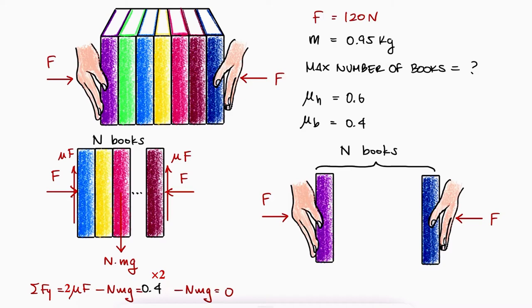In this case, we're assuming that the friction force going up is caused by the books on both sides. So, if 10 books can be held by two more books pushing on them, we would conclude that the maximum number of books is 12.